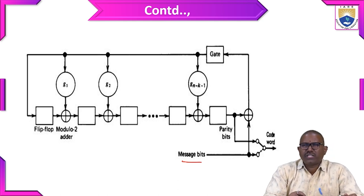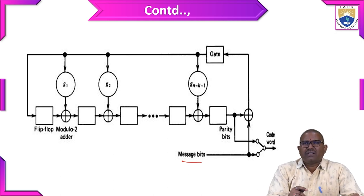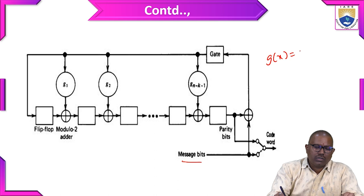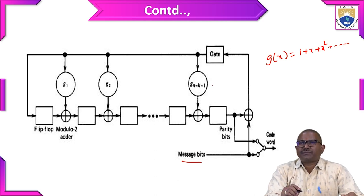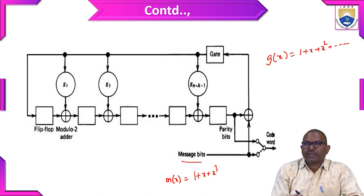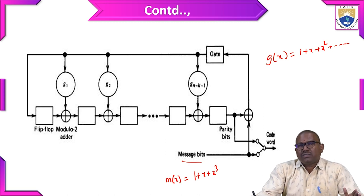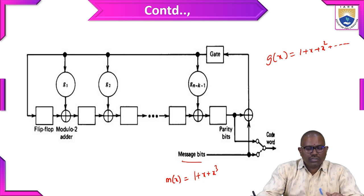Here g₁, g₂, up to g_{n-k-1} denote the connections. This is because g(x) is a generator polynomial of the form 1 plus x plus x² and so on. If a connection is present, that term of the polynomial is present. For example in this picture, g(x) equals 1 plus x plus x² up to the (n-k-1) term. The modulo-2 sum adder is equivalent to the XOR gate operation.